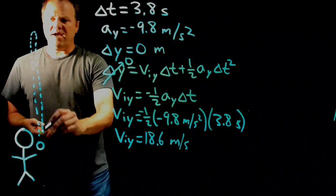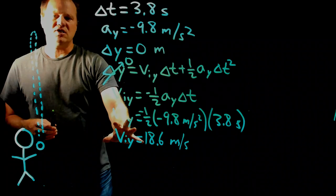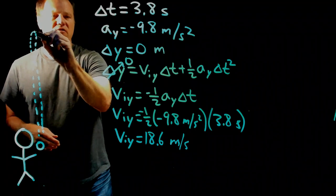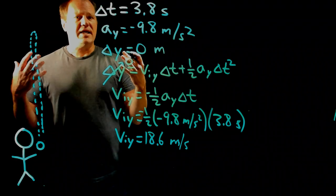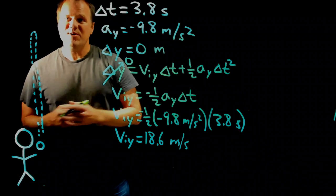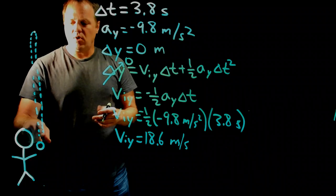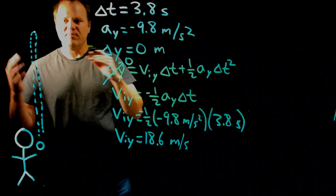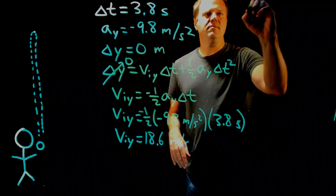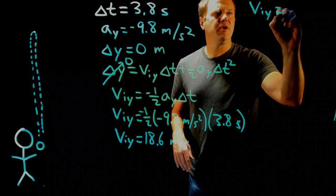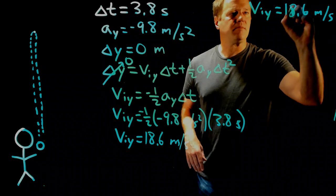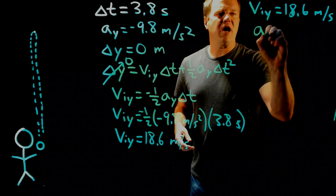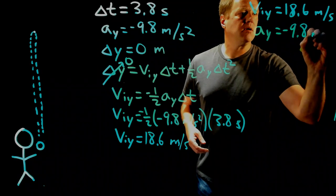Next, we need to find the maximum height. You need to be careful here — some of the previous information is still true, some is not. I'm going to treat the initial condition as the ball leaving the person's hand, and the final condition as the top of the trajectory. The initial velocity in the y-direction is still 18.6 meters per second, and once the ball leaves the hand going all the way up to the top, it's still under the influence of gravity alone: negative 9.8 meters per second squared.